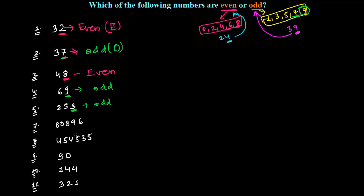The next number is 80896. However big or small it is, it doesn't matter. You just have to see the last digit. The end digit is 6 and 6 comes in the group of even numbers. So that's why this is an even number.